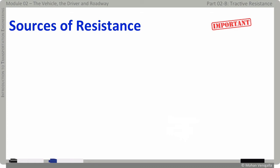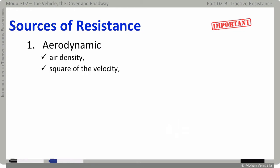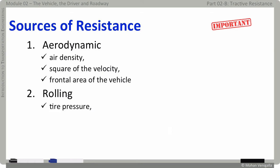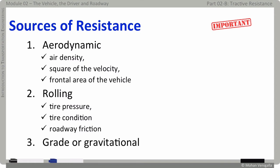The three major sources of vehicle resistance are: aerodynamic resistance, which is directly proportional to air density, the square of velocity, and frontal area of the vehicle; rolling resistance, which originates from the interface between the roadway surface and tires and depends on tire pressure, tire condition, and roadway friction; and grade or gravitational resistance.